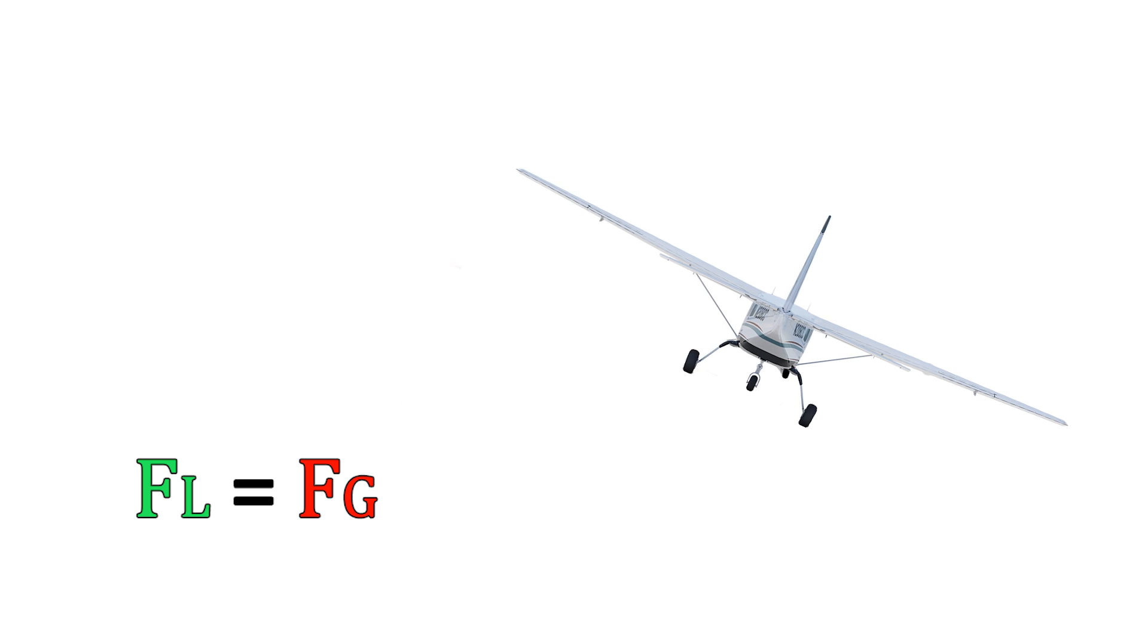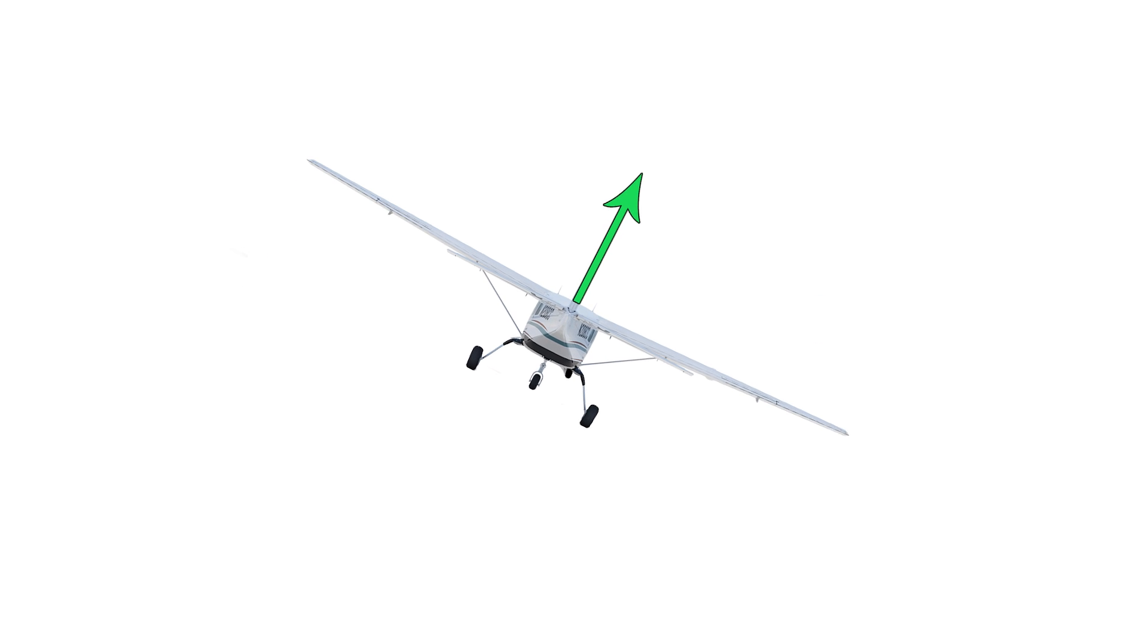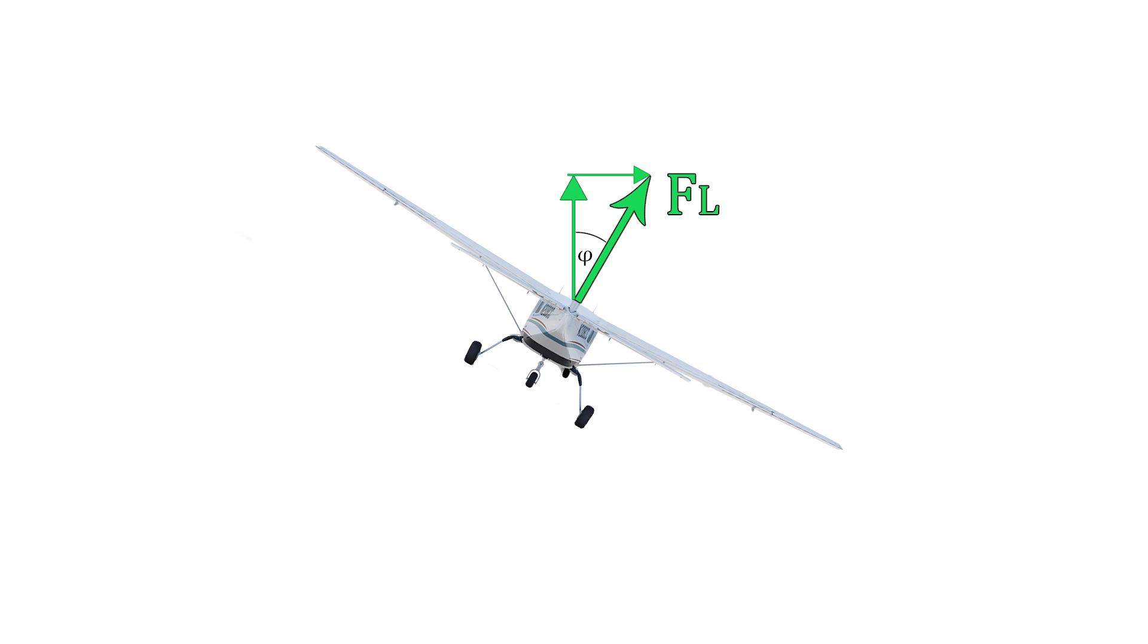However, when we initiate a turn, the relationship between these two forces change. After initiating a turn, the lift force divides into a vertical and a horizontal component. Note that only the vertical component counteracts the weight of the airplane. This means we have to increase the lift, so that the force of the vertical component equals the force of gravity.